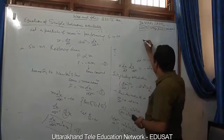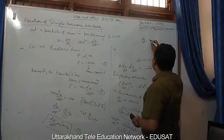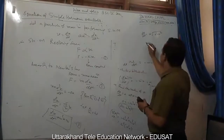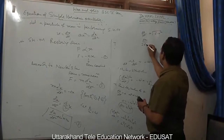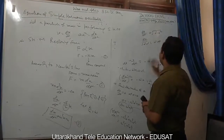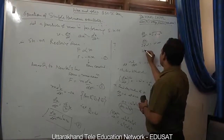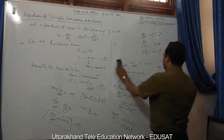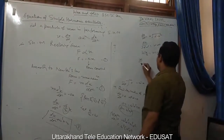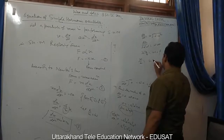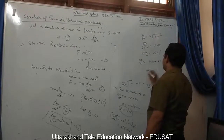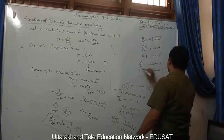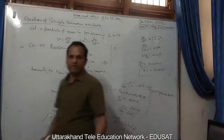From here, dx/dt = ω√(a² − x²). Rearranging: dx/√(a² − x²) = ω dt. Integrating both sides gives sin⁻¹(x/a) = ωt + φ, so x/a = sin(ωt + φ), and therefore x = A sin(ωt + φ). This is the equation of simple harmonic motion. Thank you.